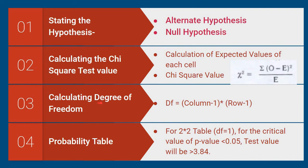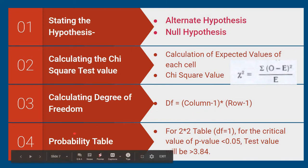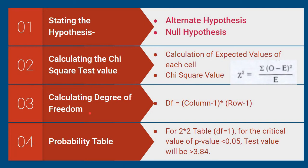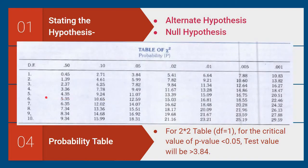In the third step, we move on to the calculation of degree of freedom, which is calculated by the formula: (columns minus 1) multiplied by (rows minus 1). For any 2×2 table, the degree of freedom is going to be 1.